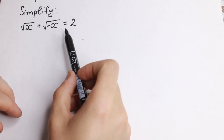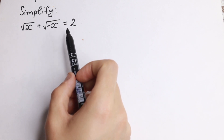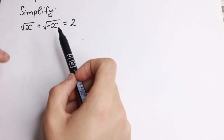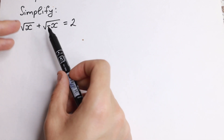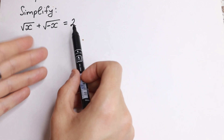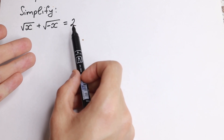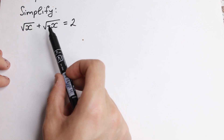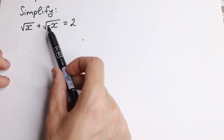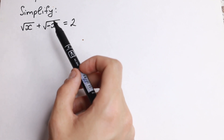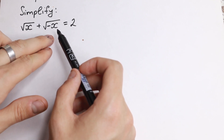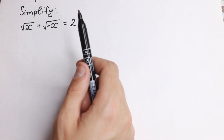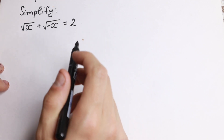We have square root of x plus square root of minus x equal to 2. It looks like a traditional equation because we have x and square roots, but if you look closely we have this minus right here, and it's not good for us — because square root and minus is not a good pair.